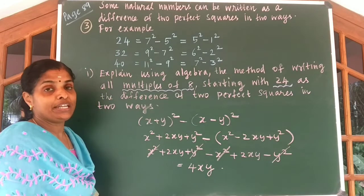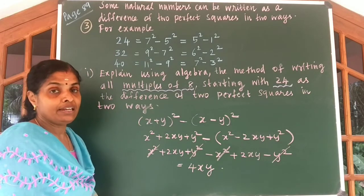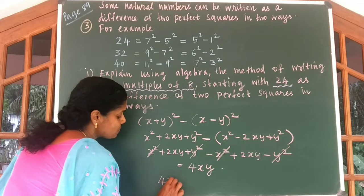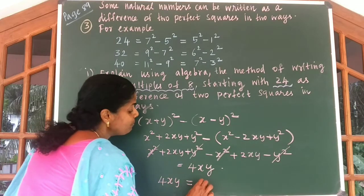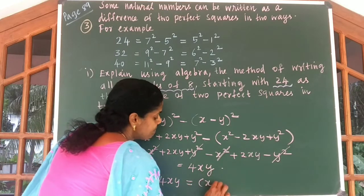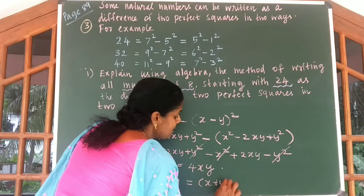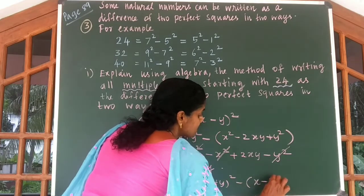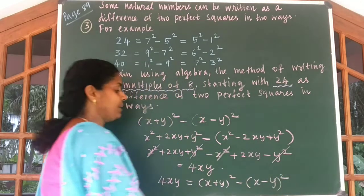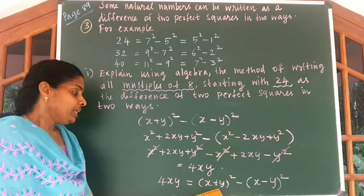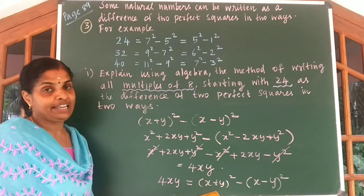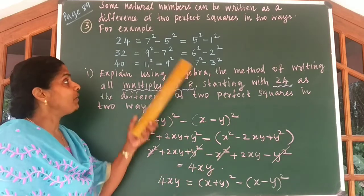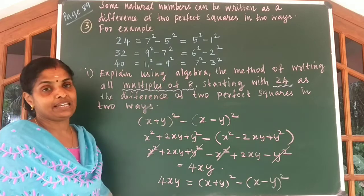What remains is 2xy plus 2xy, which is equal to 4xy. So you should understand that 4xy is equal to x plus y whole square minus x minus y whole square. If you understand this idea, you can write the answer for this question very easily.